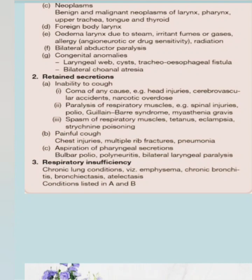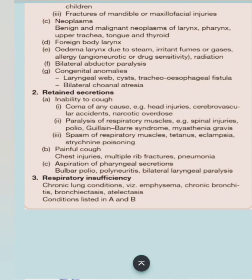The second indication is retained secretions, occurring in three conditions. First, when the patient is unable to cough, as in coma from head injury, cerebrovascular accident, narcotic overdose, or paralysis of respiratory muscles from spinal injuries, polio, Guillain-Barré syndrome, myasthenia gravis, or spasm of respiratory muscles in tetanus, eclampsia, strychnine poisoning. Second, painful cough as in chest injuries, multiple rib fractures, or pneumonia. Third, aspiration of pharyngeal secretions as in bulbar polio, polyneuritis, or bilateral pharyngeal paralysis. The third indication is respiratory insufficiency due to chronic lung conditions like emphysema, chronic bronchitis, and atelectasis.